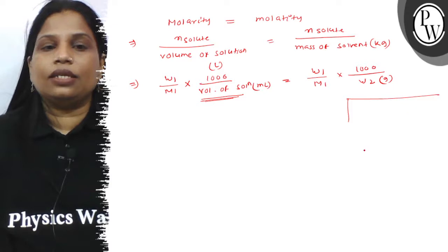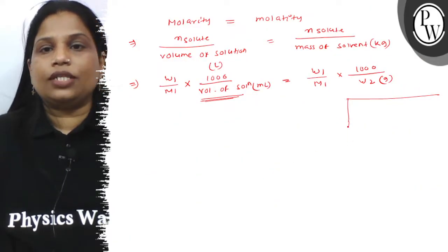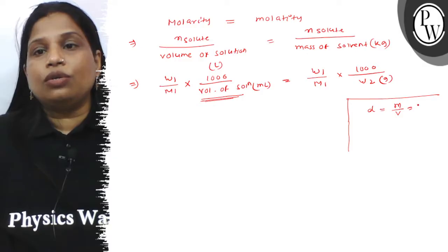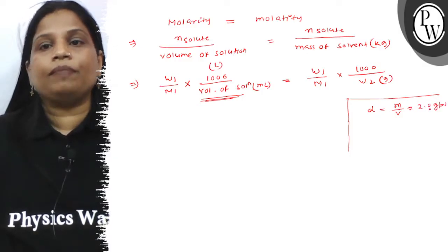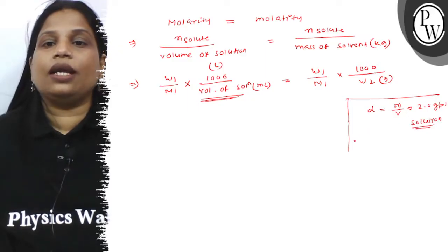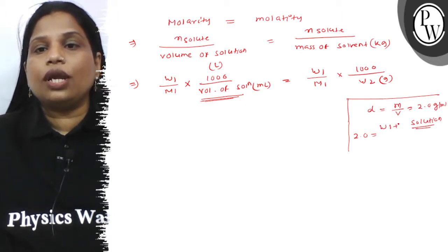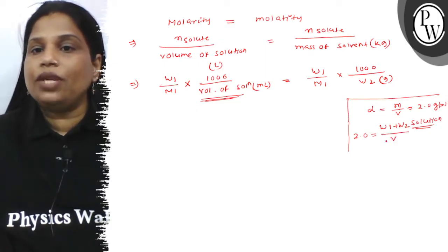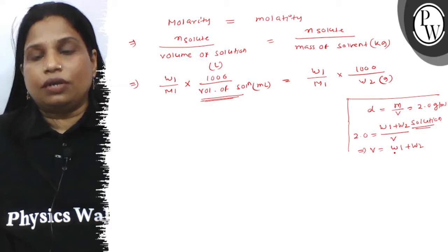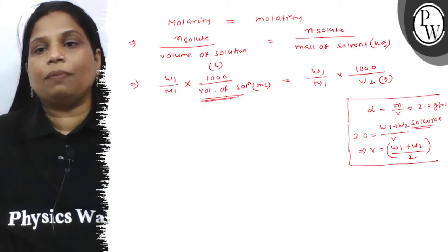Now, to calculate the volume of the solution, notice that the density value is given. Density of the solution is 2.0 gram per mL. Density is mass divided by volume equals 2.0 gram per mL. So W1 plus W2 divided by V equals 2.0, which gives us volume V equal to W1 plus W2 divided by 2. We can now put this V value into our equation.